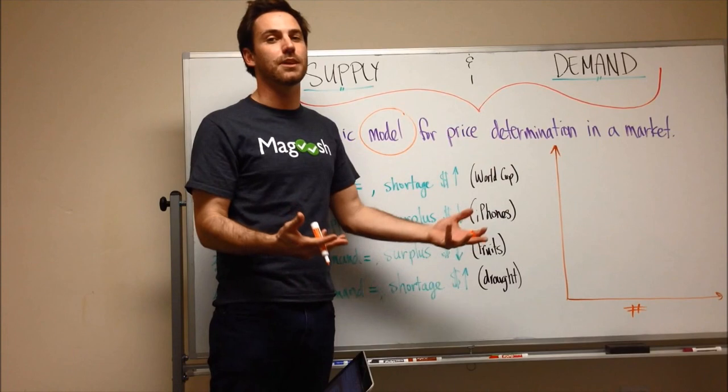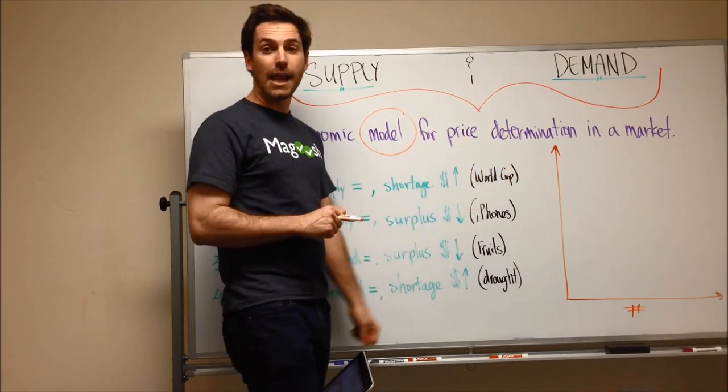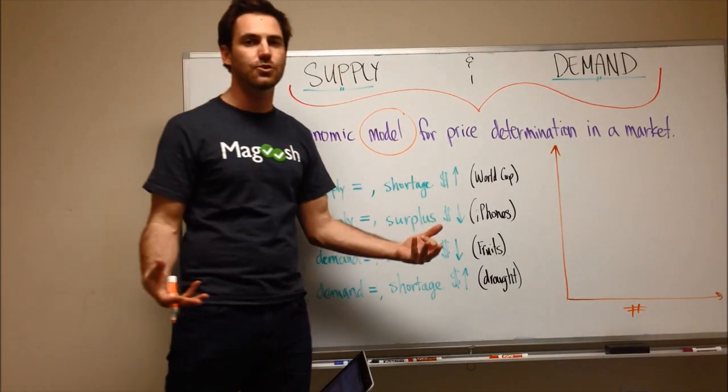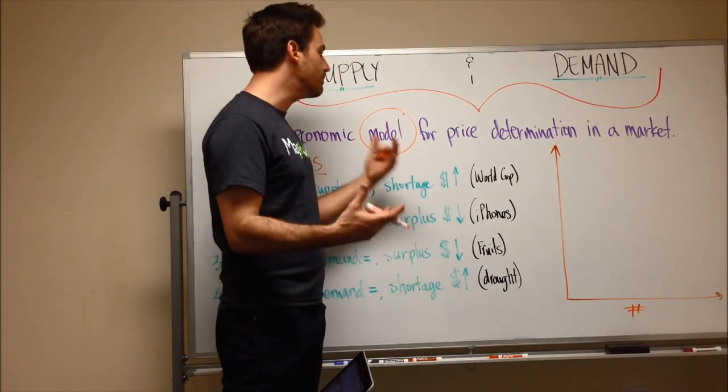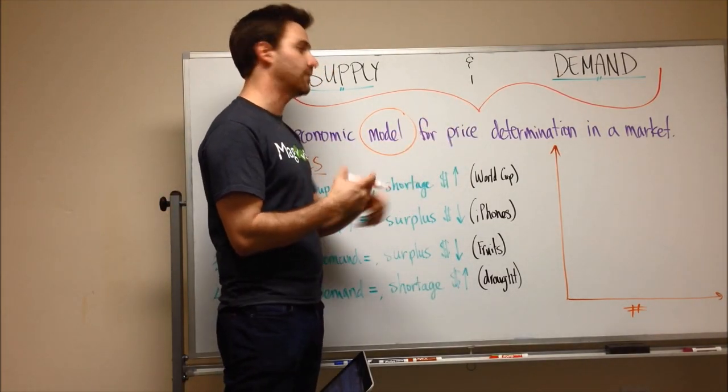We're trying to model it as best we can. We're trying to understand what actually happens in a competitive market. So there's absolutely going to be exceptions to this rule. But this is a good place to start. And this is definitely where everyone starts in Economics 101.